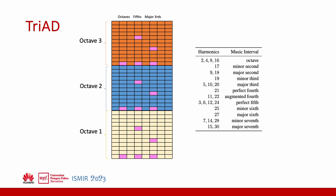TriAD starts from the idea that many harmonics are associated to certain music intervals. In fact, most of the harmonics are associated to the unison, the perfect fifth, and the major third intervals.